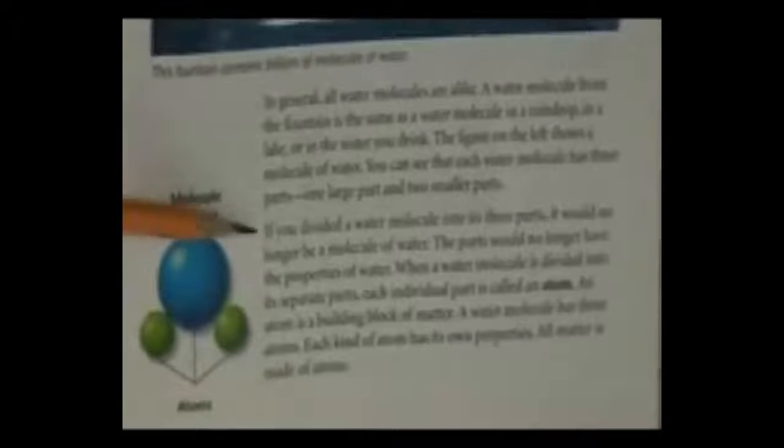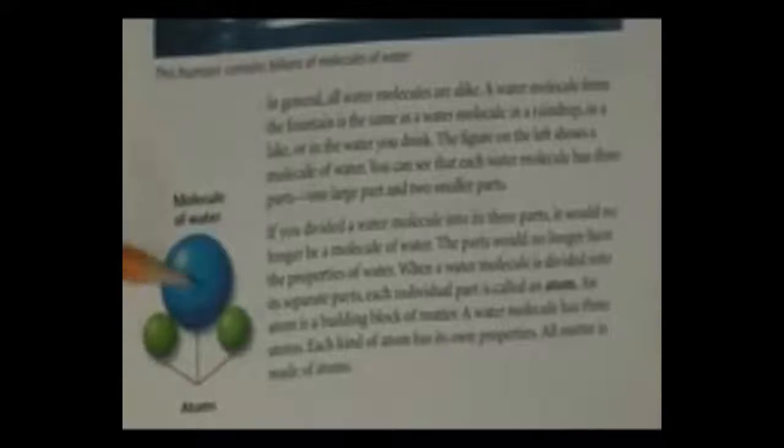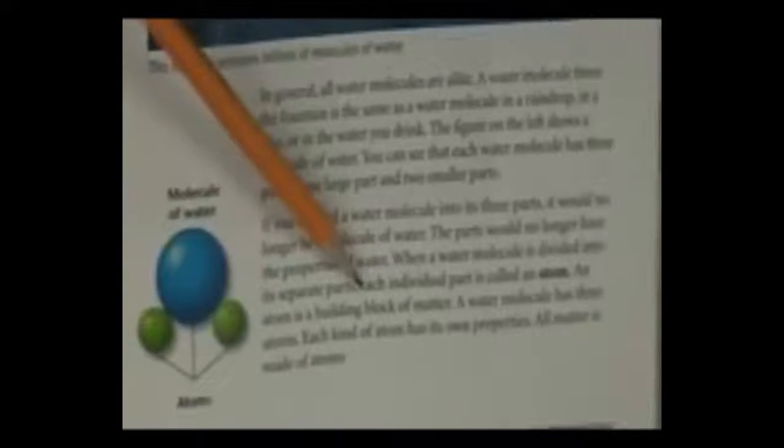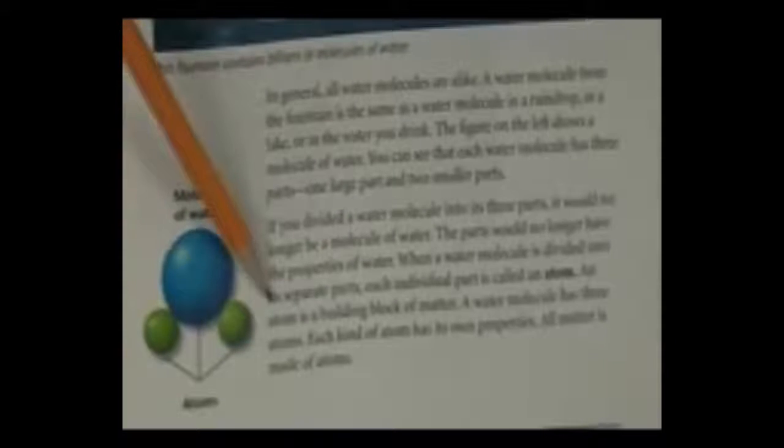If you divided a water molecule into its three parts, it would no longer be a molecule of water. The parts would no longer have the properties of water. When a water molecule is divided into its separate parts, each individual part is called an atom. An atom is a building block of matter. A water molecule has three atoms. Each kind of atom has its own properties. All matter is made of atoms.